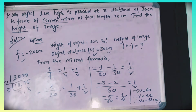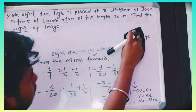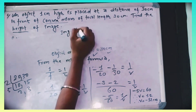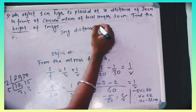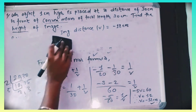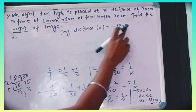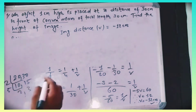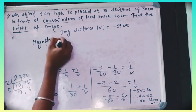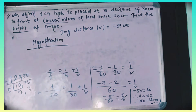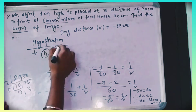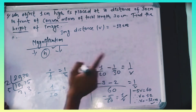V is equal to the image distance, which is minus 60 cm. To find the height of the image, we use magnification. Magnification equals image distance divided by object distance, i.e., v over u.